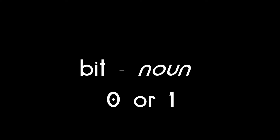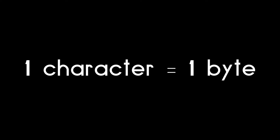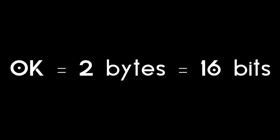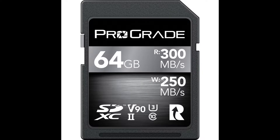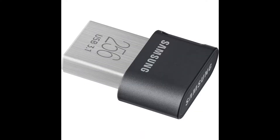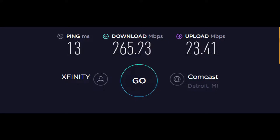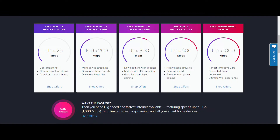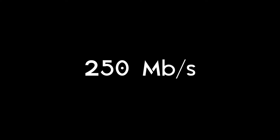One byte is eight bits. A bit is like the atom of computer processing and data — a zero or a one defines a bit. To define one character of text, you need eight bits. One character equals one byte. So to type 'OK' requires two bytes, or 16 bits of data. They're not typically used to measure the same thing: bytes are for data storage, but bits are for bandwidth. Your internet service provider may say 250 megabits per second, but that equals 31.25 megabytes per second.